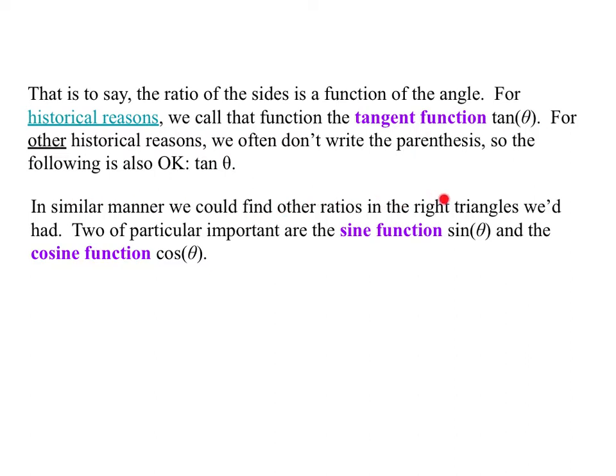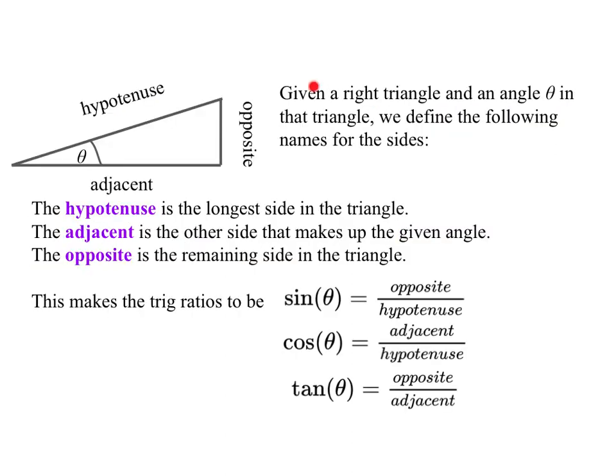In a similar manner, we could find other ratios in the right triangles that we had. Two of particular importance are the sine function sine and the cosine function cos. Given a right triangle and an angle theta in that triangle, we define the following names for the sides.